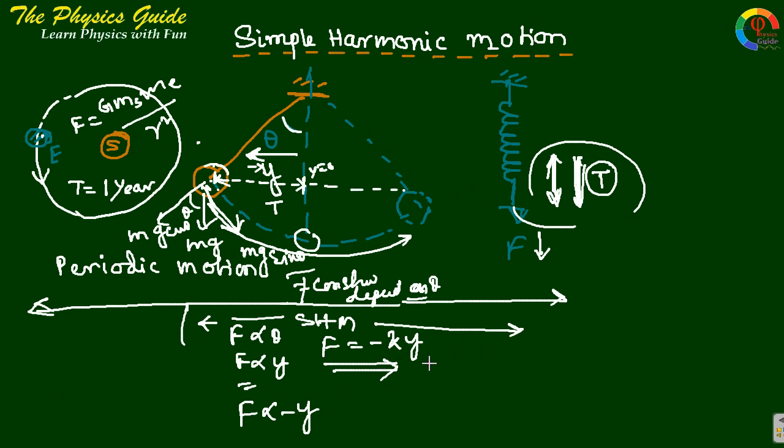Because we know F equals mass into acceleration, that is d²y/dt². So just put this in the equation: m d²y/dt² equals minus k y.